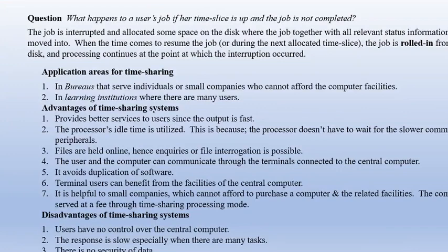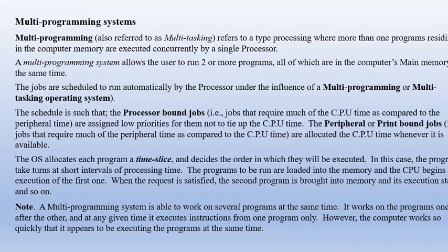Application areas for time sharing include learning institutions with many users such as university systems, e-learning systems, and bureaus. Multiprogramming, also called multitasking, refers to a type of processing where more than one program residing in computer memory is executed concurrently by a single processor. A multiprogramming system allows the user to run two or more programs all in computer memory at the same time. Jobs are scheduled to run automatically by the processor under the influence of a multiprogramming or multitasking operating system; each part is given a time slice.